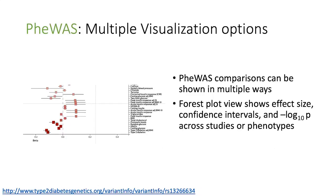There are multiple ways to visualize this data available in the portal, and you can see this on the single variant information page. This is a forest plot that shows things in terms of effect size, confidence intervals, and negative log10 p-values across all the bottom-line analysis phenotypes available.